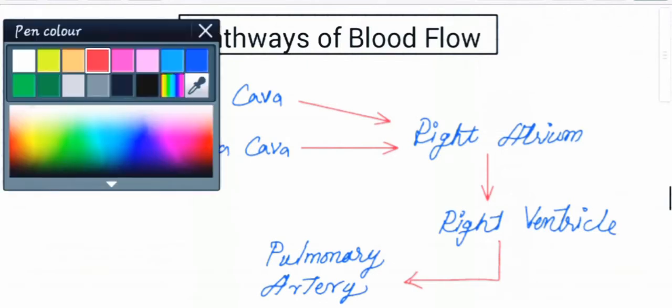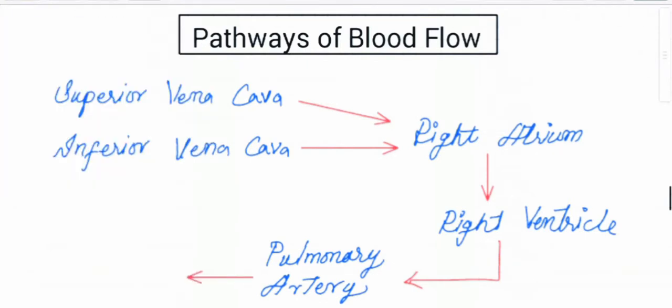Pulmonary artery is the only artery of body having deoxygenated blood. Between right ventricle and pulmonary artery is a valve called semilunar valve which prevents backflow of blood.